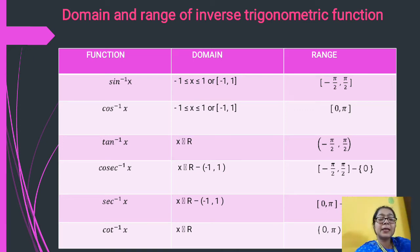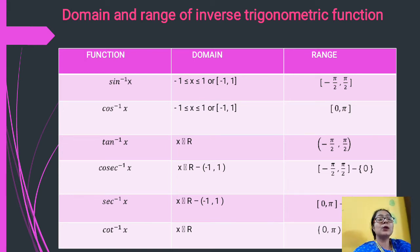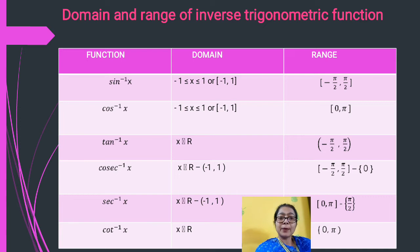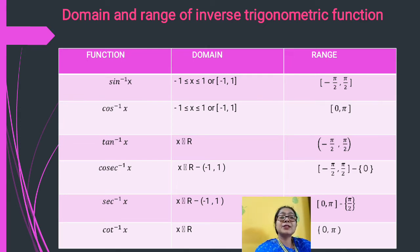Sec⁻¹(x): x belongs to real numbers except −1 and +1. The restricted range is [0, π] except π/2, because just as cosec⁻¹(0) is not defined, sec⁻¹(π/2) is also not defined. Then cot⁻¹(x): x belongs to all real numbers and the range is (0, π).